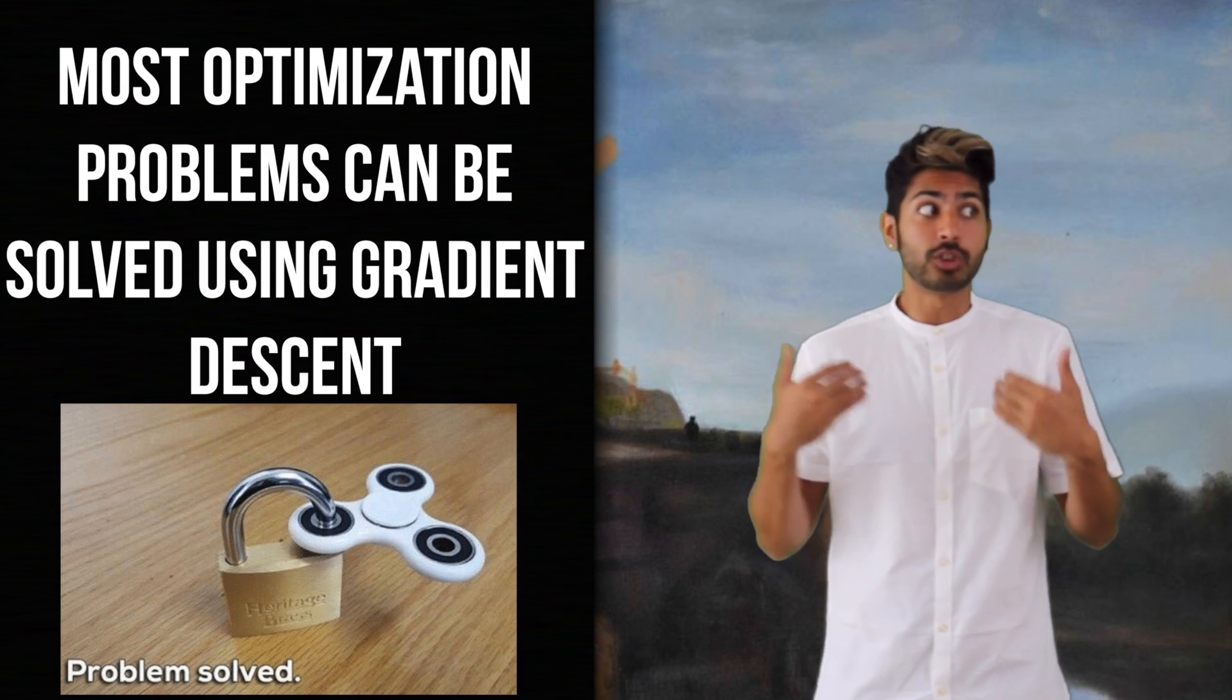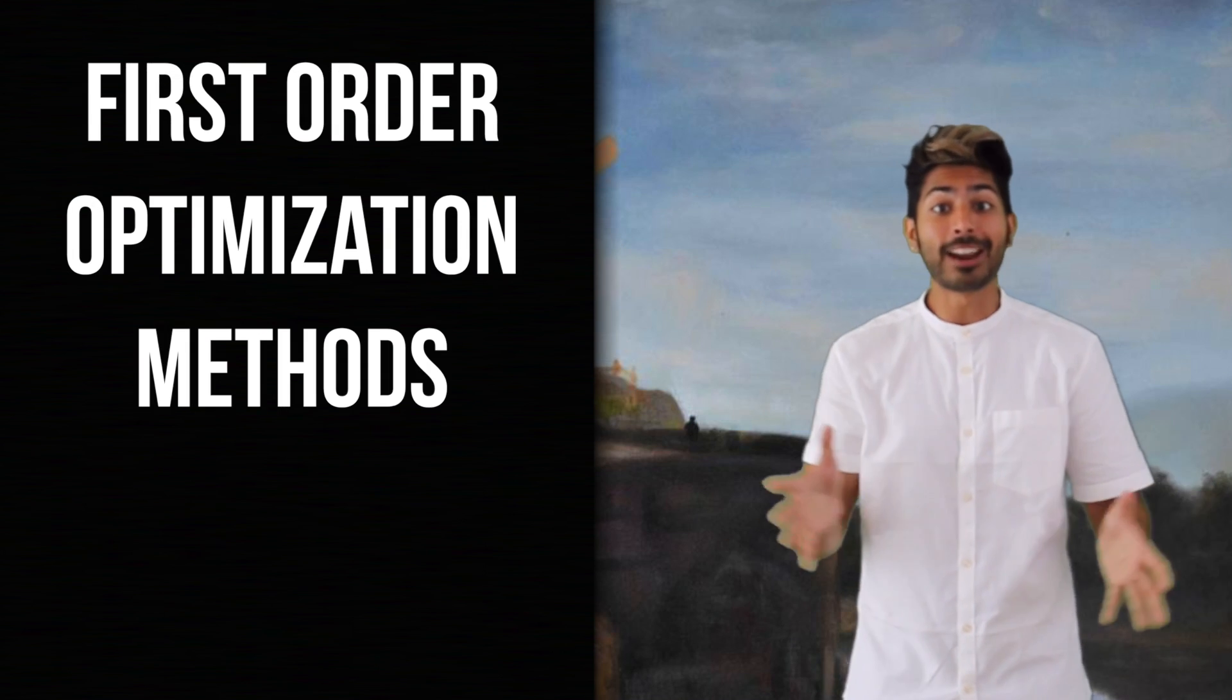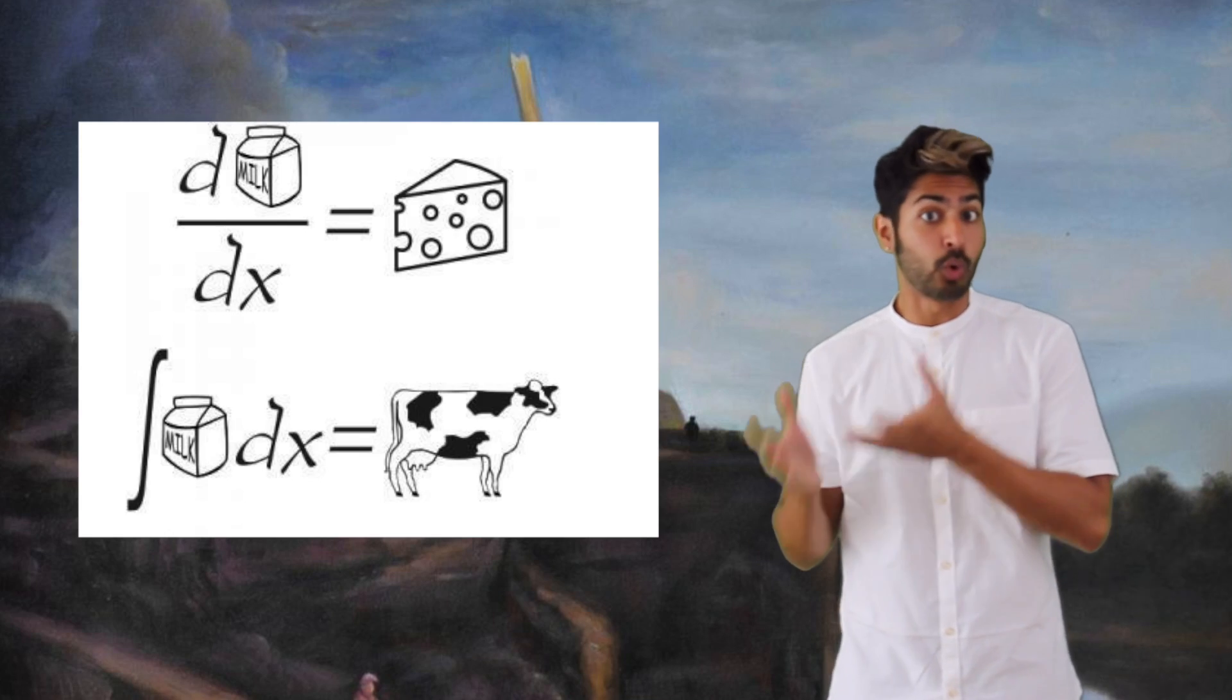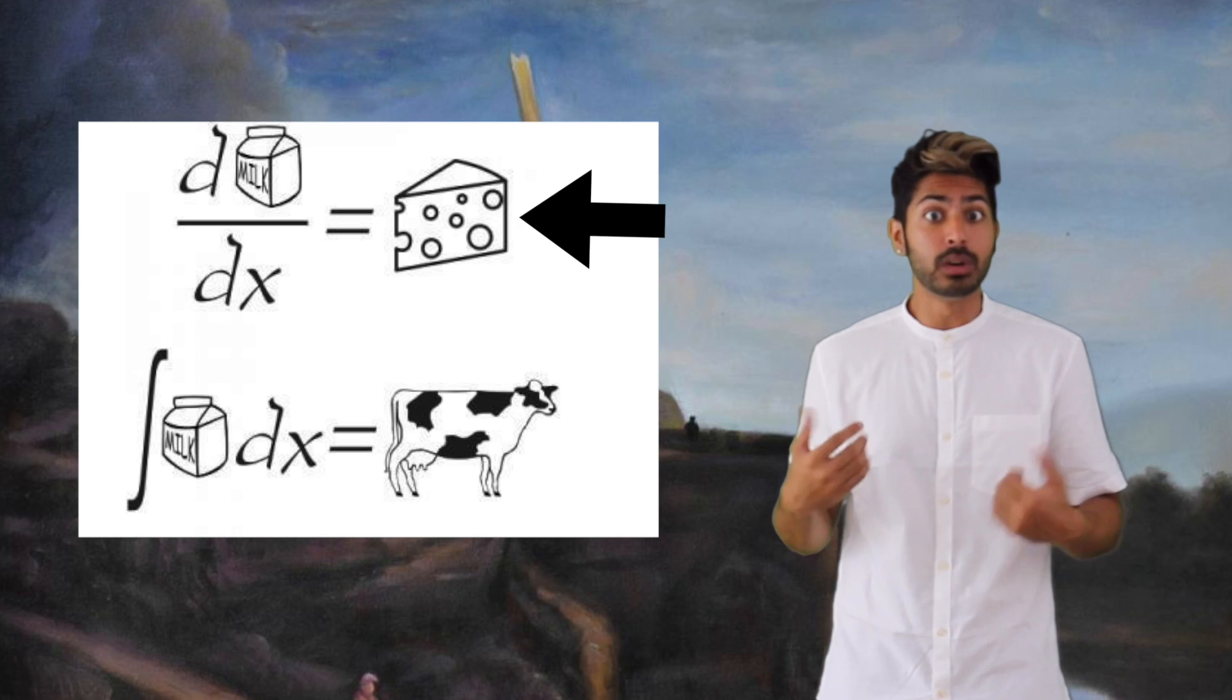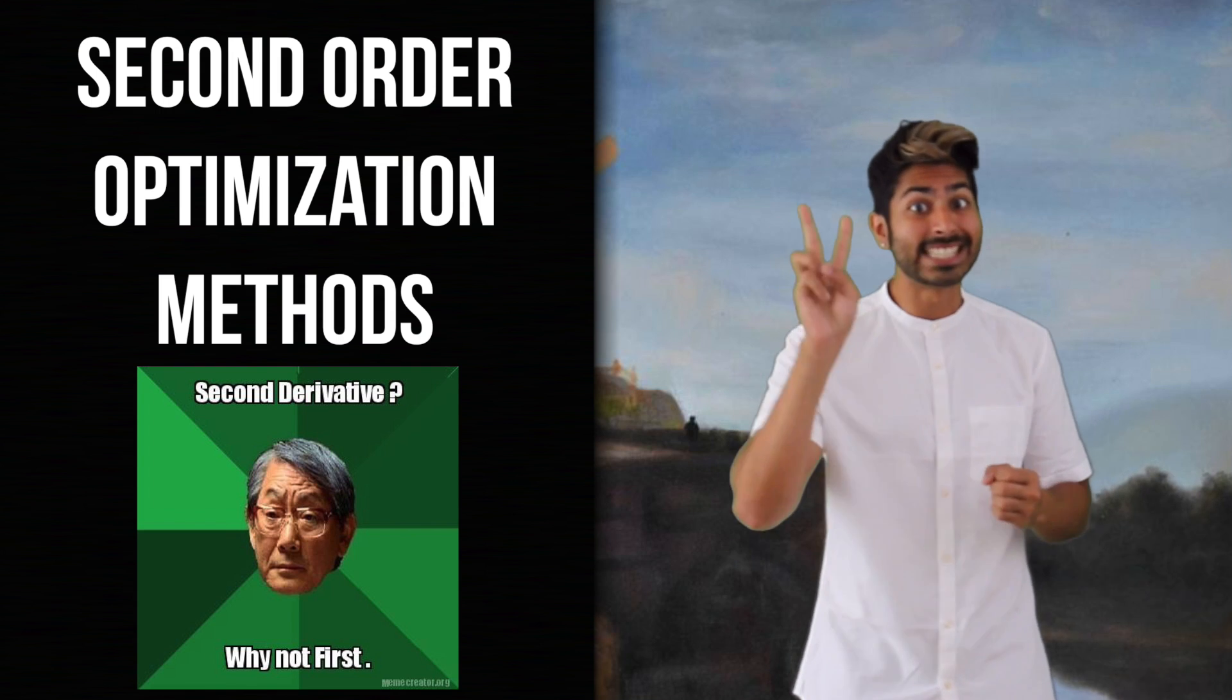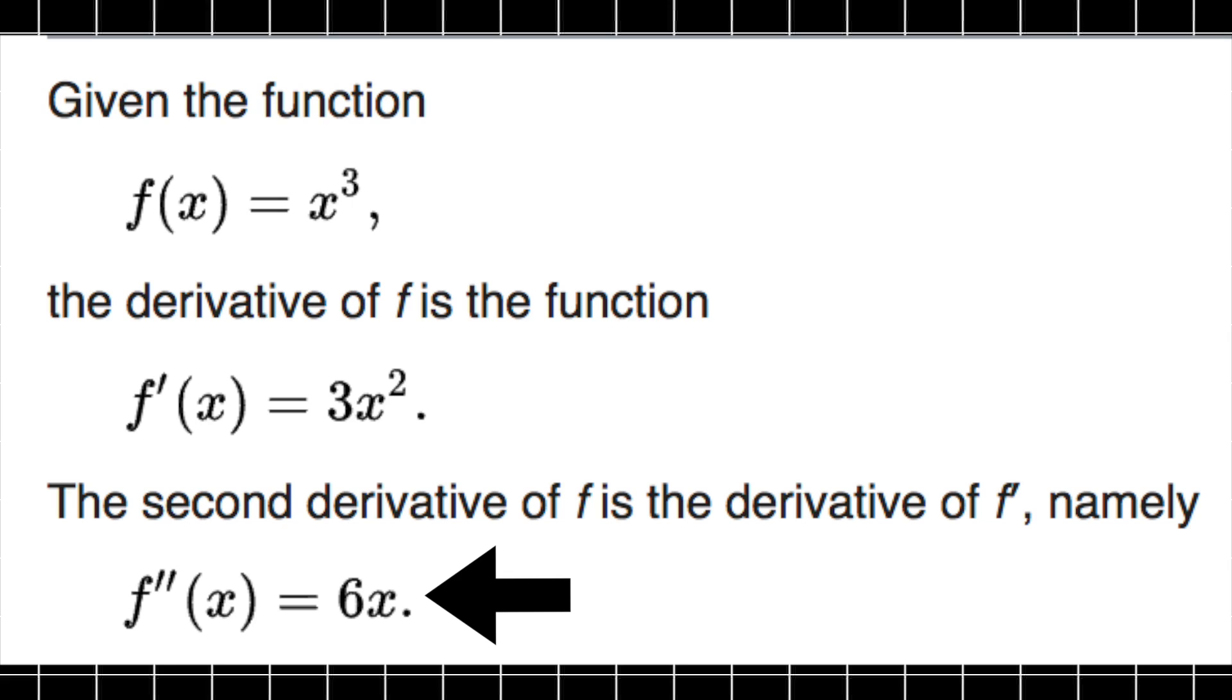Most optimization problems can be solved using gradient descent and its variances. They all fall into a category called first-order optimization methods. We call them first-order because they only require us to compute the first derivative. But there's another class of techniques that aren't as widely used called second-order optimization methods, that require us to compute the second derivative. The first derivative tells us if the function is increasing or decreasing at a certain point, and the second derivative tells us if the first derivative is increasing or decreasing,